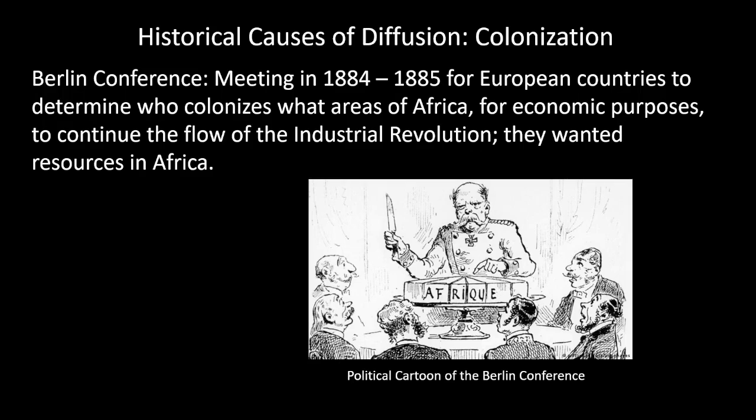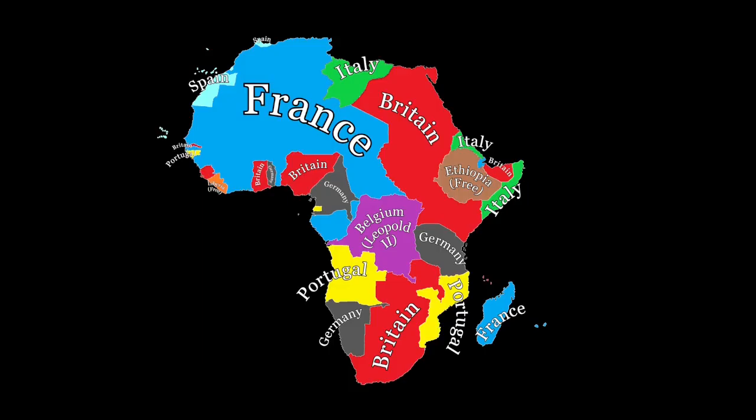So they decided who gets what parts of Africa and made a map. This is the outcome of it — the country and what part of Africa they controlled is shown on the map. And of course, people from these countries went to Africa and regulated a bunch of Africa there.